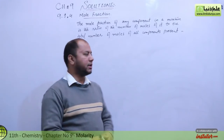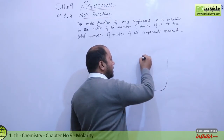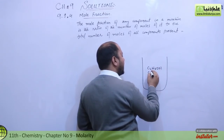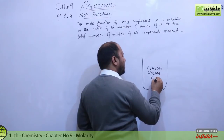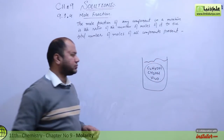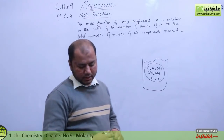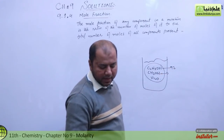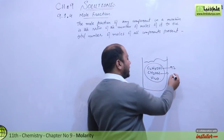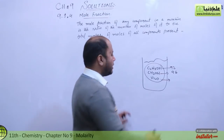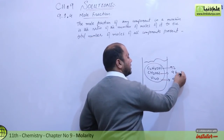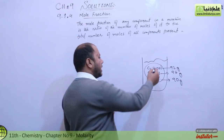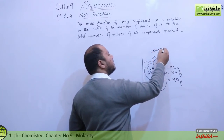Let's say that we have a solution. We have ethyl alcohol C2H5OH, we have methyl alcohol CH3OH, and we have water. This is a mixture — a mixture with three components. Add the word 'components' to your dictionary — the parts of a mixture.